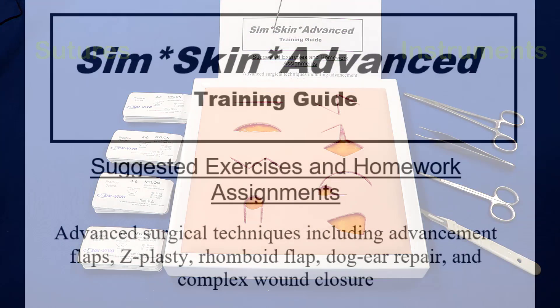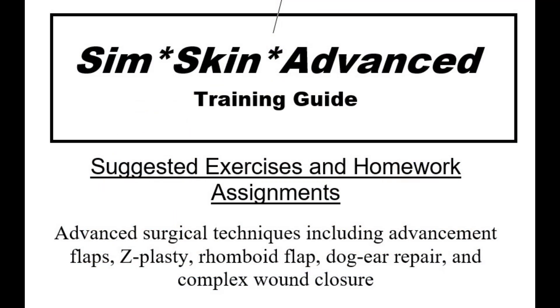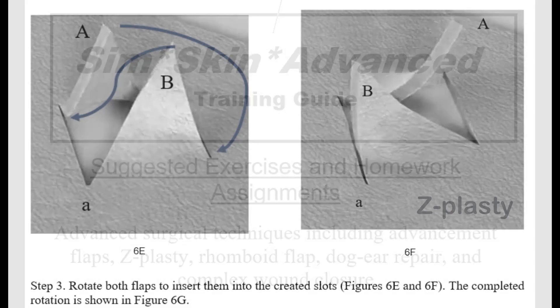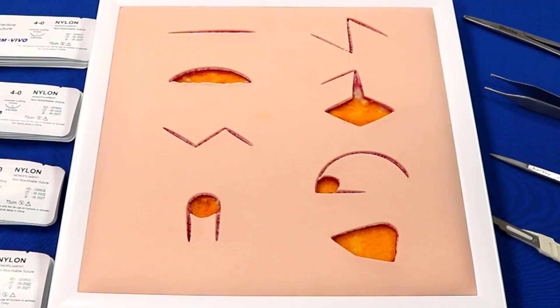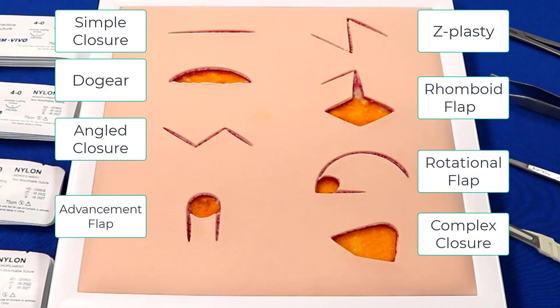The included comprehensive guidebook outlines each step of the procedure with figures and detailed explanations. And to make it even easier, the SimSkin Advanced Board has markings that provide clear guidance for all the steps for each procedure.